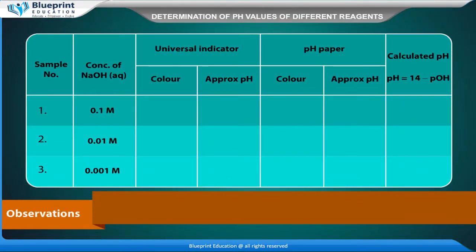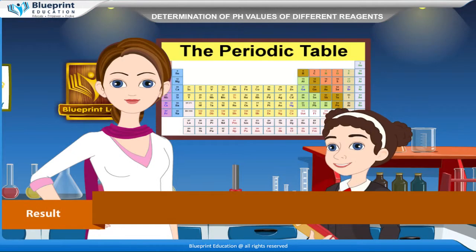Observation table columns: sample number, concentration of NaOH (aqueous), universal indicator color, approximate pH, pH paper color, approximate pH, and calculated pH. The calculated pH is determined using the formula: pH = 14 − pOH, where pH + pOH = 14 and pOH = −log[OH⁻].